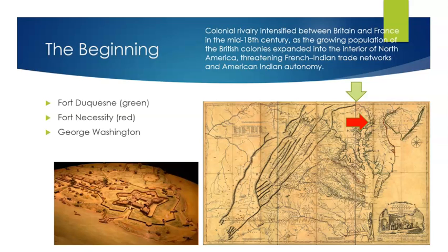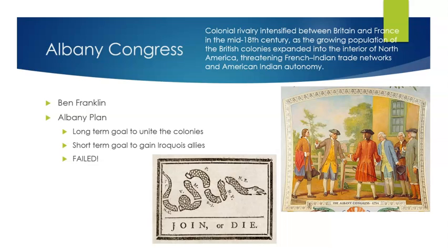Washington's troops attacked this position, gaining a small initial victory, but ultimately were forced to surrender to a superior force of French soldiers and their Native American allies on July 3rd, 1754. Washington had attempted to build a small fortress of his own that he called Fort Necessity, but he had been unable to hold it. Therefore, the cause of this French and Indian War is essentially territorial disputes in the Ohio River Valley.